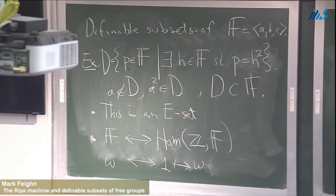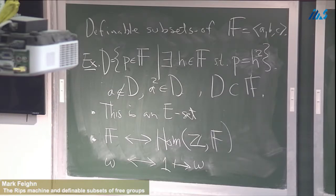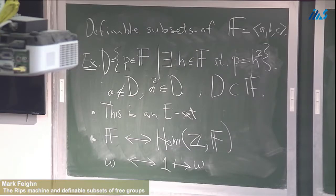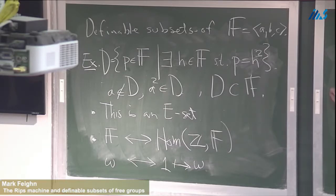Instead of thinking about this definable subset D directly, we'll think of P as being a copy of the integers, and we can imagine mapping the integers to the integers by multiplication by two. We think of the set D as being the set of all homomorphisms P from Z into the free group with the property that there exists an extension — changing the definition from symbols into a generalized kind of extension problem. This is an example of an E-set.